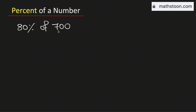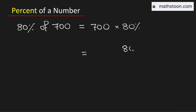In order to find 80% of 700, we need to multiply 700 with 80%. We know that 80% is the same as 80 over 100, and we need to multiply this with 700.